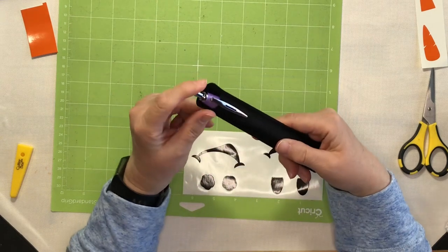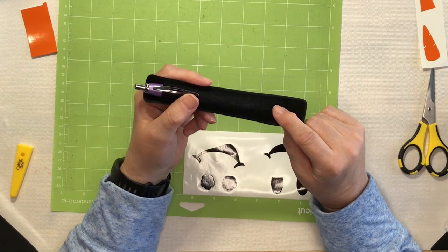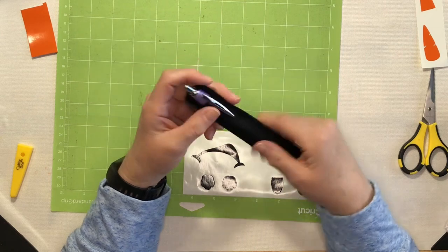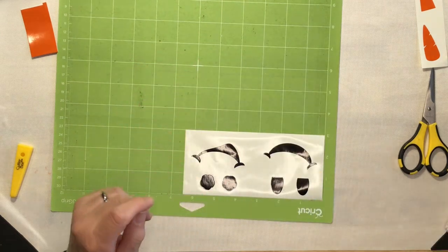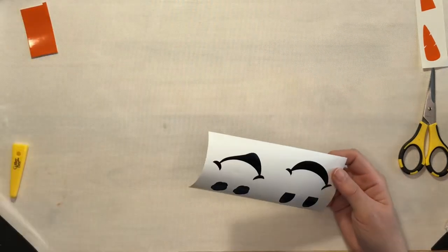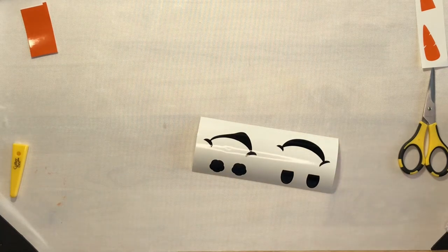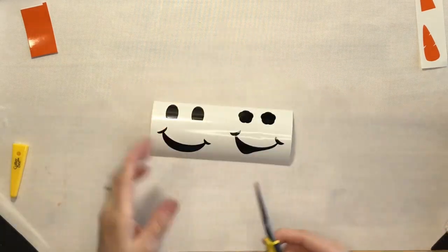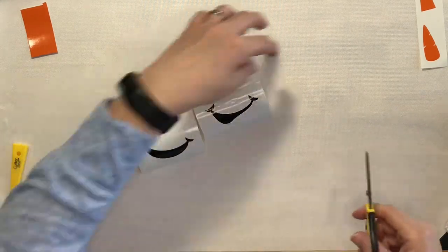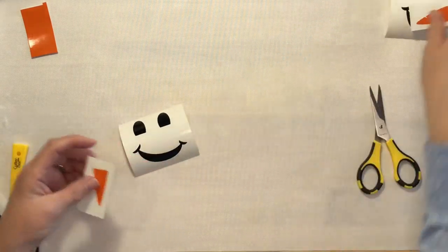So because the Pin Pen Weeding Tool has a very fine needle at the end of it, I always make sure to put it back in this protective case so I don't grab it and try to write with that. Because that would not work well. So we will set that off to the side. And I'm just going to go ahead and trim these apart and place the nose with the face.